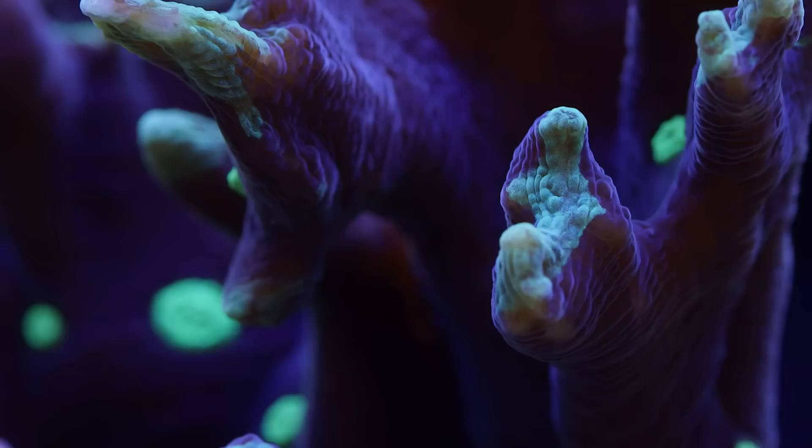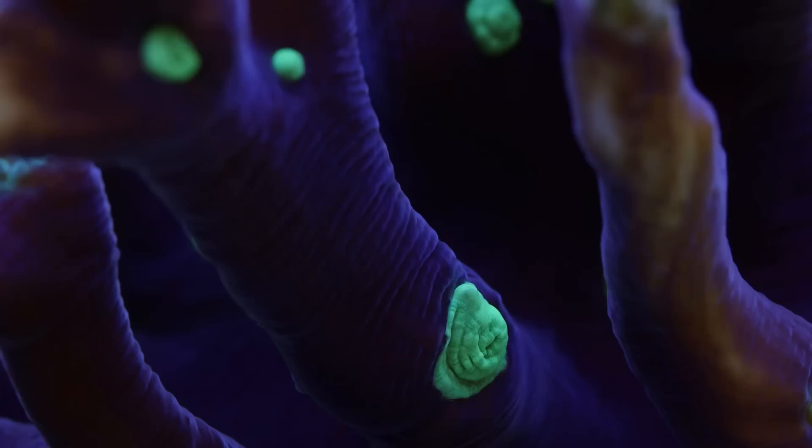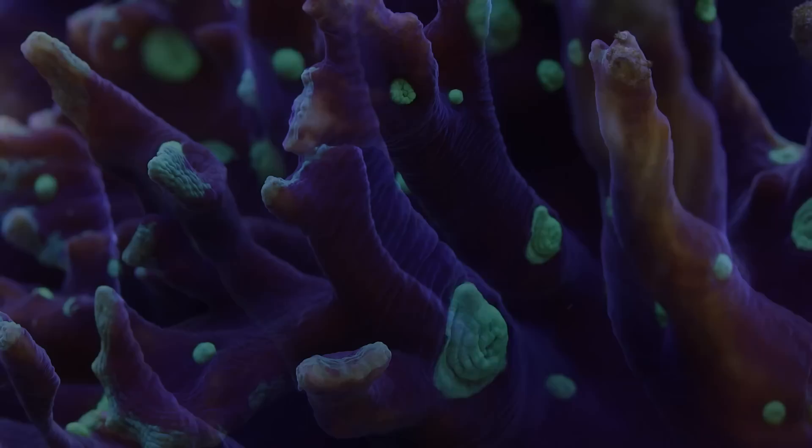Long story short, nobody knows for sure, but a strong contender might be Pectinia, which is the subject of this video. The common name is the spiny cup coral, and you can sort of see why. They have these very distinctive cup-like shapes that grow spire-like branches.